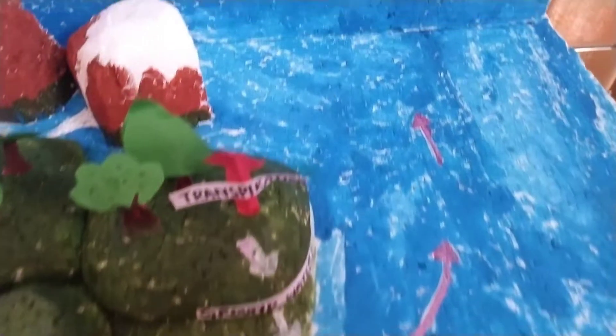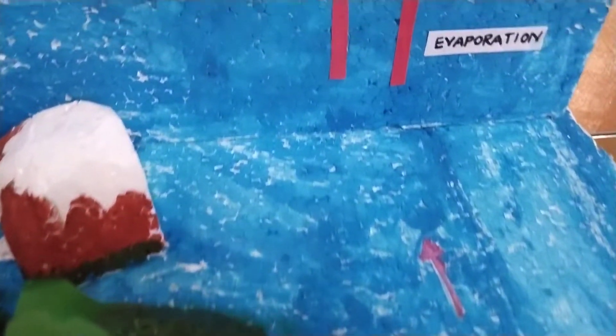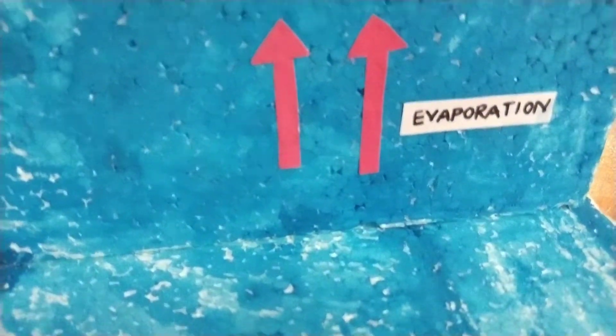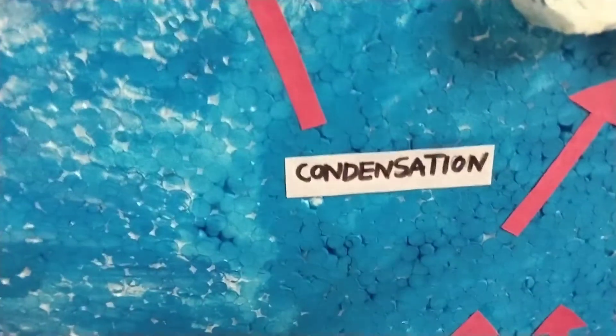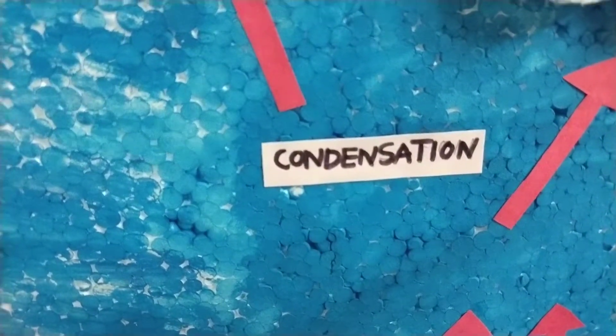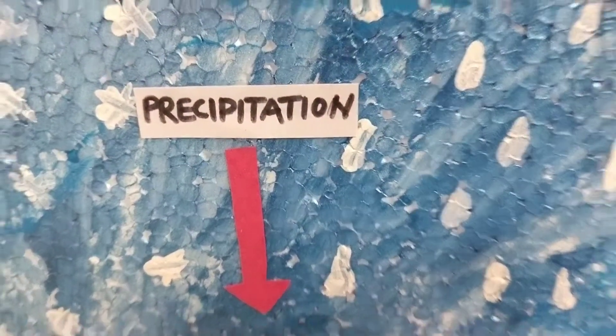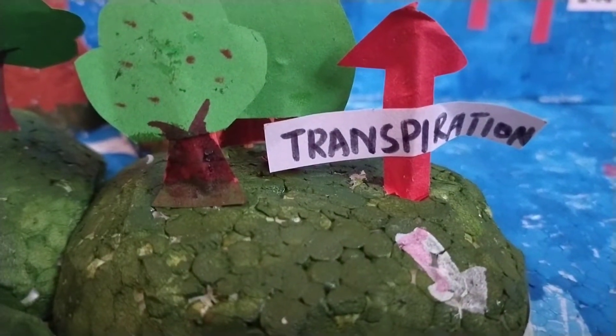So, the water cycle is the continuous process of evaporation, condensation, precipitation, and transpiration.